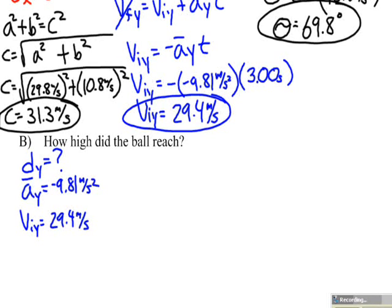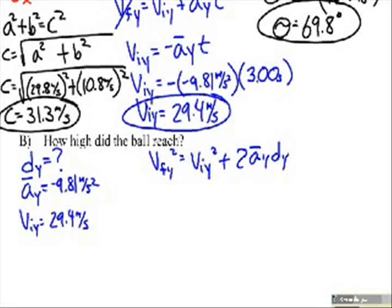Choosing the equation that involves these variables, I come up with VFy squared equals Viy squared plus 2Aydy. So, if we consider when the final velocity in the y direction is zero, that would be at the maximum height or at the apex.